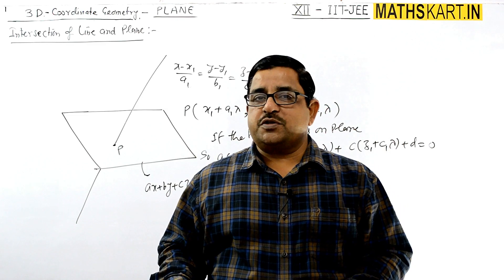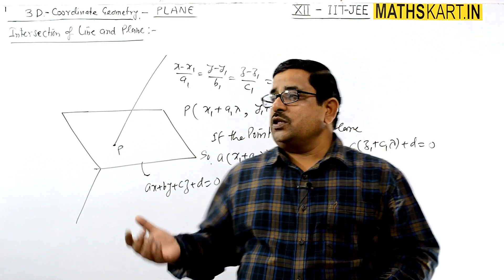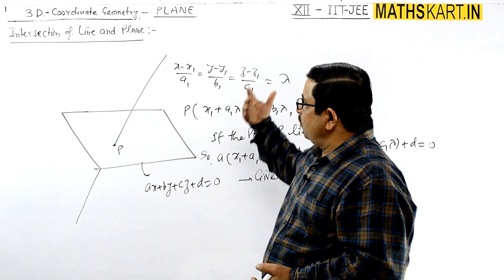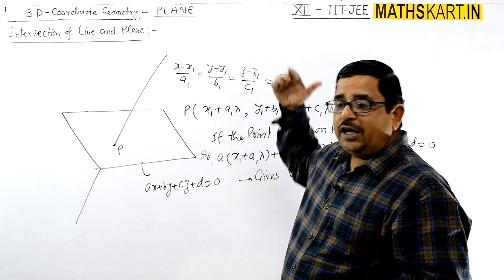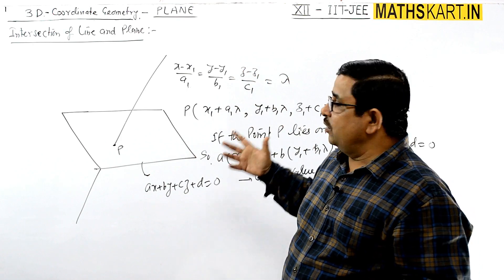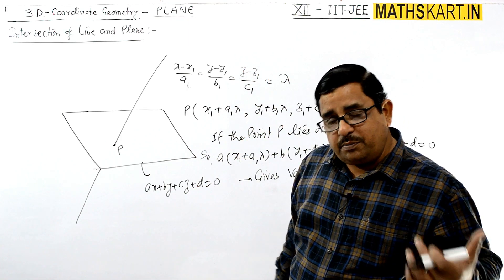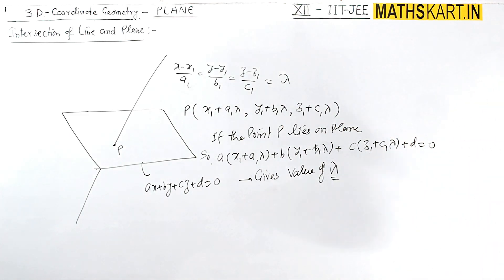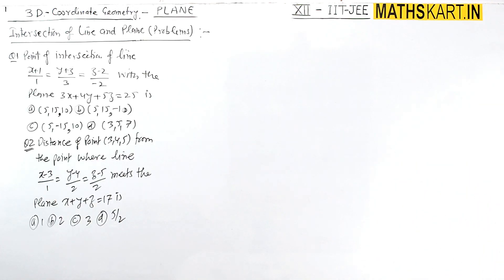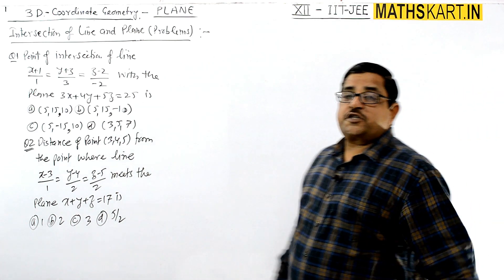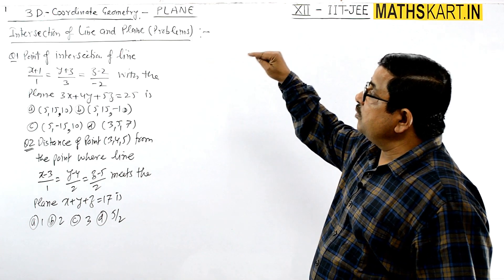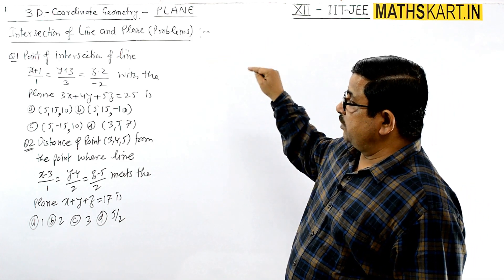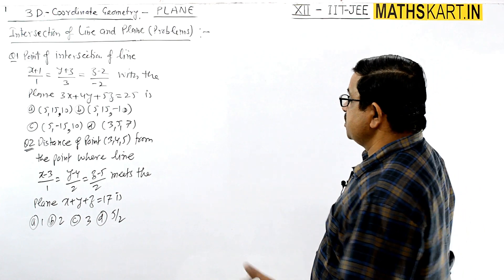It could be that an unknown is placed in the plane or in the line equation, or we need to find the distance between two points, or satisfy some other condition — all of that can be worked out from lambda. Question 1: find the point of intersection of a line with the plane directly.